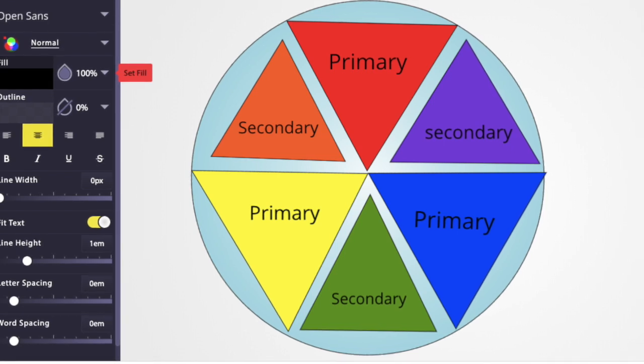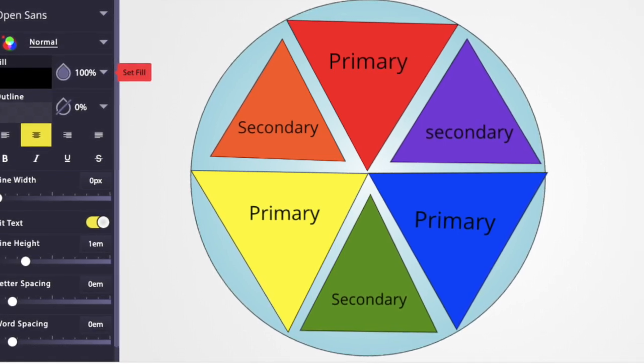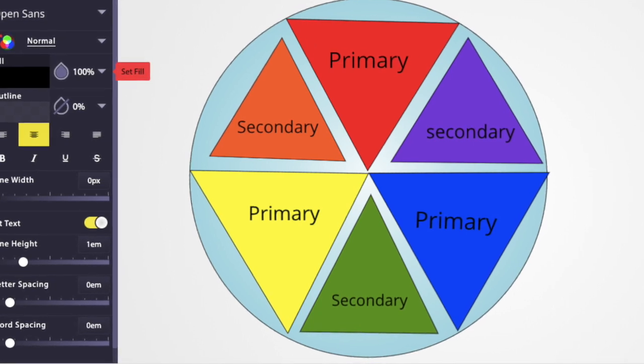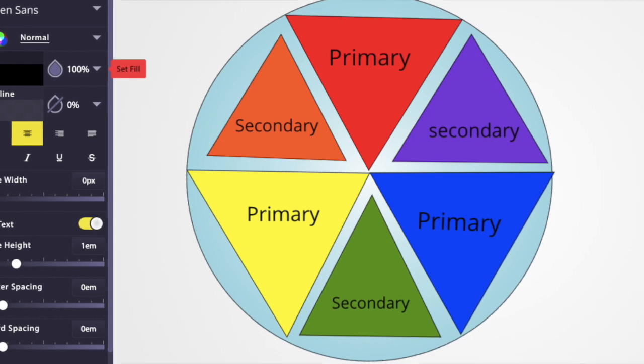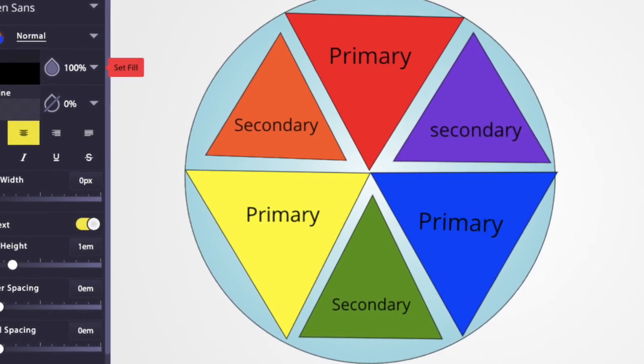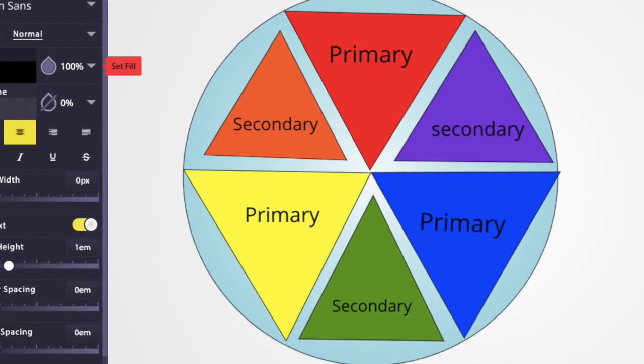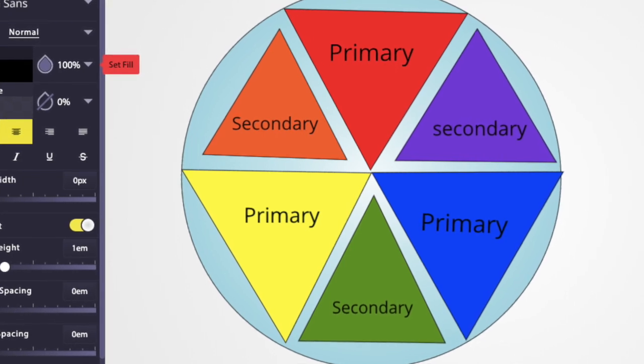Okay, third graders, you're going to be in charge of making a color wheel in Sketchpad and you are going to be making the basic color wheel, which is just the primary and secondary colors. You are going to make sure that you label all of them, which ones are primary and which ones are secondary.